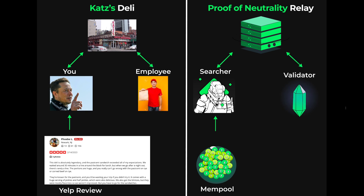The employee who gives you the sandwich can be compared to a validator that uses their validator key to sign and propose blocks to the blockchain. The sandwich shop is a trusted intermediary between the customer and the employee ensuring food safety, just as relays connect block builders and validators in a trusted manner.